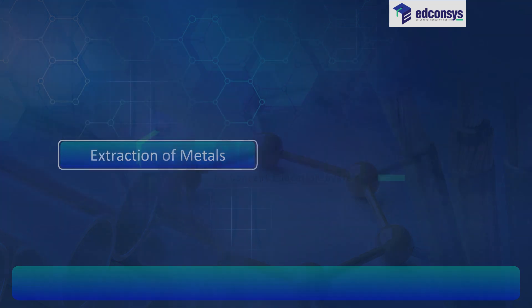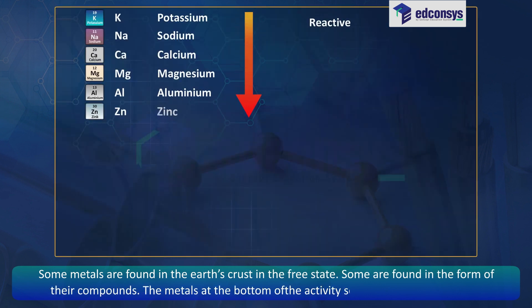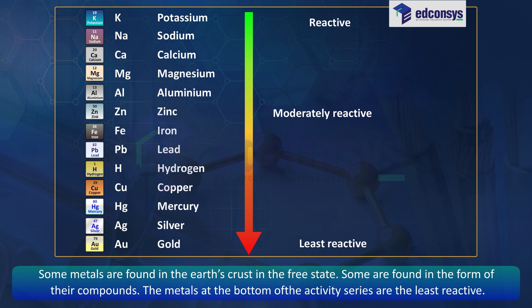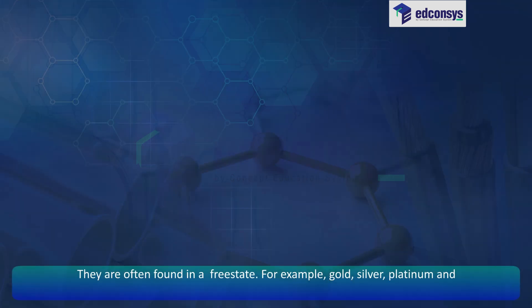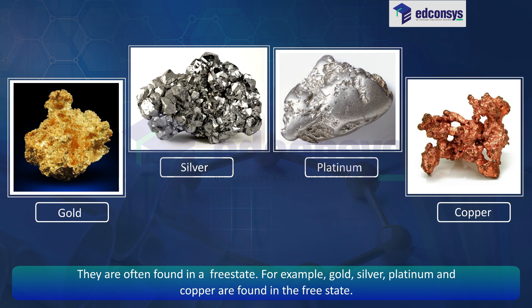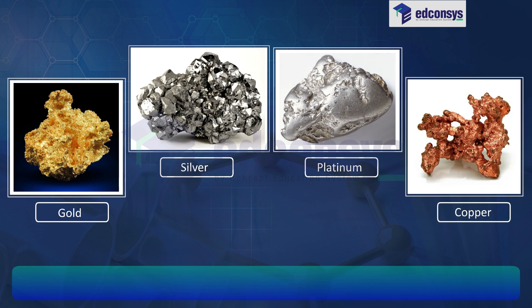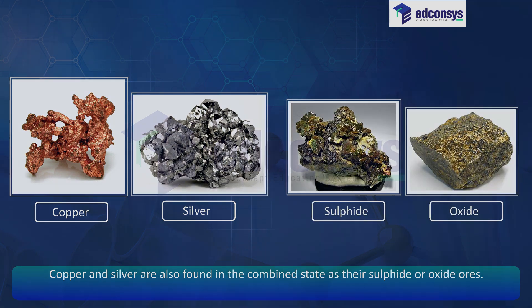Extraction of Metals. Some metals are found in the earth's crust in the free state, and some are found in the form of their compounds. The metals at the bottom of the activity series are the least reactive and are often found in a free state. For example, gold, silver, platinum and copper are found in the free state. Copper and silver are also found in the combined state as their sulphide or oxide ores.